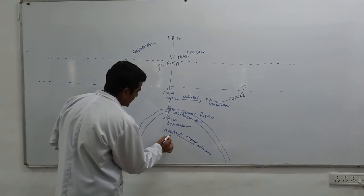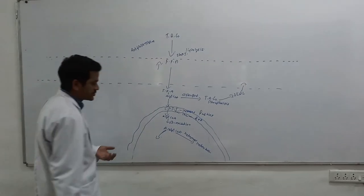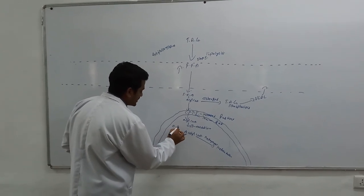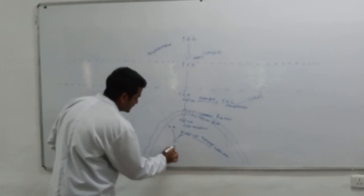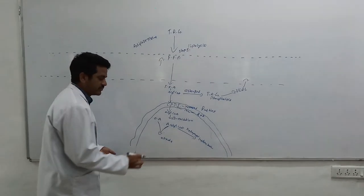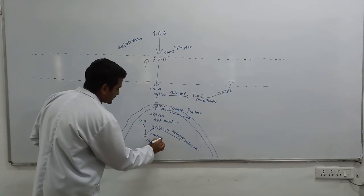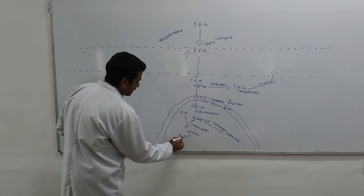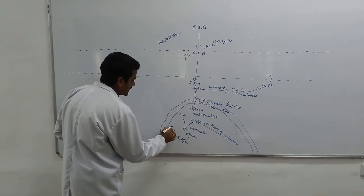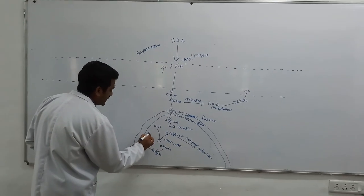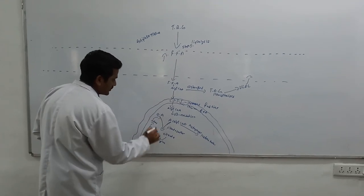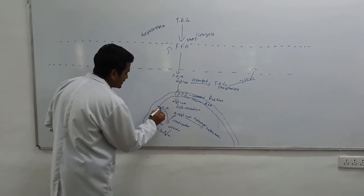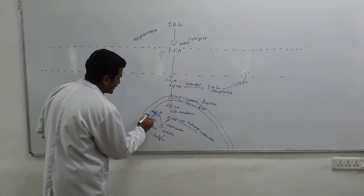The acetyl-CoA which is formed has to enter into the TCA cycle. Acetyl-CoA combines with oxaloacetate to form citrate by the enzyme citrate synthase. The citrate is then converted to succinyl-CoA, succinyl-CoA to fumarate, fumarate to malate, and malate back to oxaloacetate. The enzyme malate dehydrogenase carries out this conversion, with NADH being produced so that NAD is reduced.